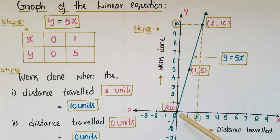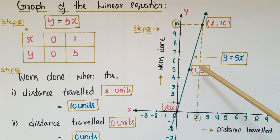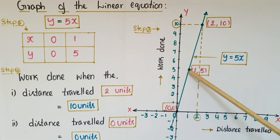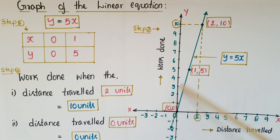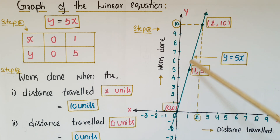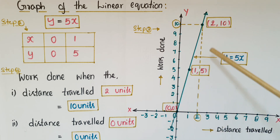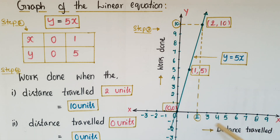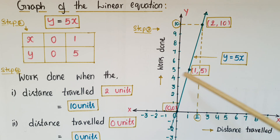Now draw the graph and mark the points (0, 0) and (1, 5), then join these two points. The line you get is y equals five x, where the x-axis represents distance traveled and the y-axis represents work done.